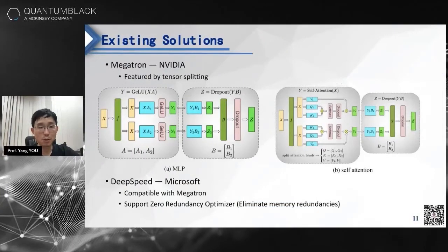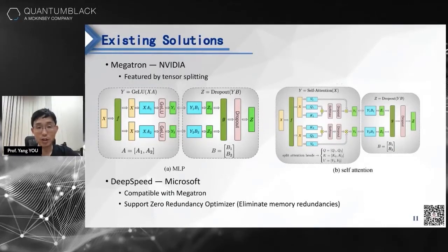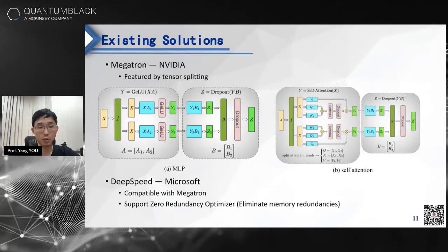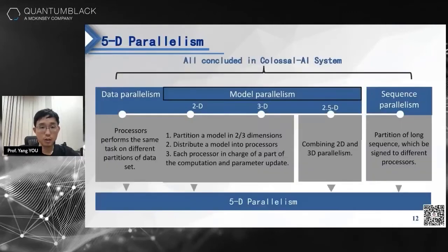The NVIDIA Megatron solution partitions the model by row or by column — it's not very efficient. Microsoft DeepSpeed partitions weight parameters evenly and offloads unused memory from GPU to CPU or even to NVMe. For our part, we want to optimize existing solutions like data parallelism and pipeline parallelism, and we also propose new parallelism like sequence parallelism.